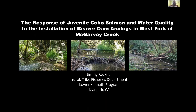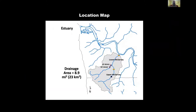Good morning, everyone. Today I'll be talking about data we've collected in relation to two beaver dam analogs that we installed in the West Fork of McGarvey Creek. McGarvey Creek is about 9.5 kilometers upstream from the Klamath River mouth. I'll be talking about a couple of different reaches: lower McGarvey, which starts from the confluence with the Klamath River; upper McGarvey Creek; and the West Fork of McGarvey Creek, where we installed the BDAs, down in the lower end of the West Fork.